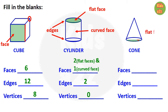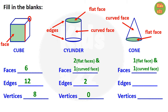Now for cone: this one is the flat face of a cone and this is the curved face of a cone, so a cone has one flat face and one curved face. This is the edge of a cone, so beside edge, kids need to write one; and a cone has one vertex — look at the picture — so beside vertices, kids need to write one.